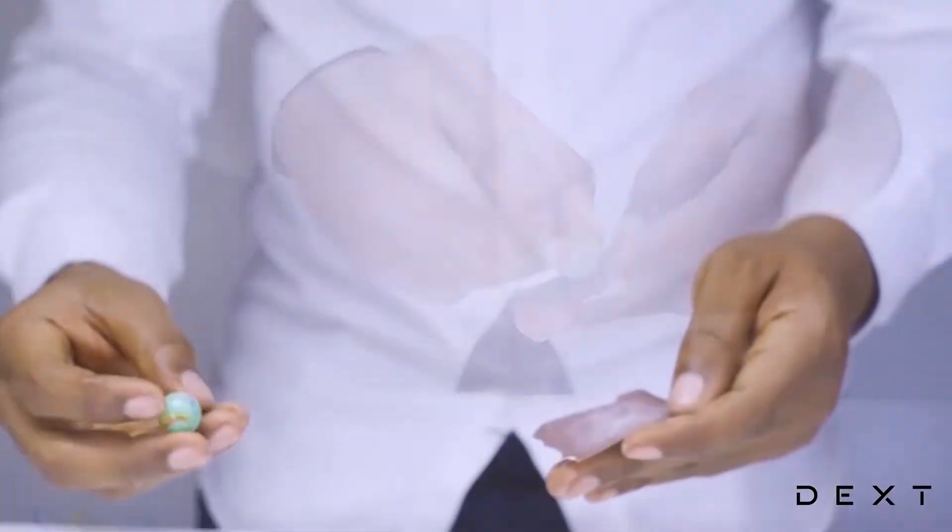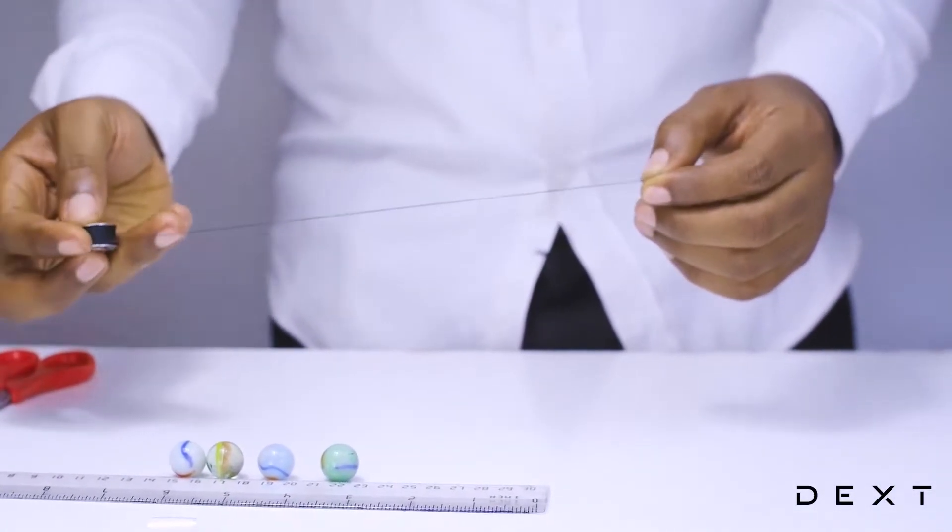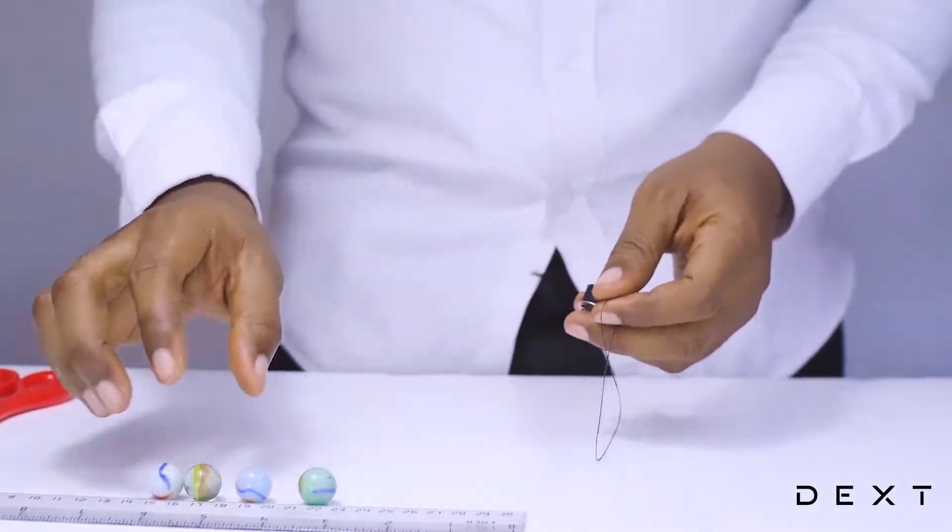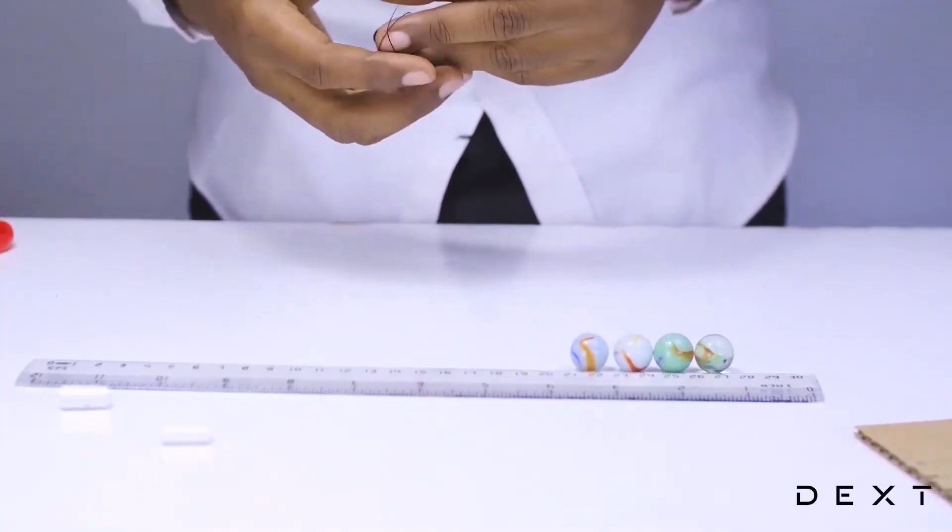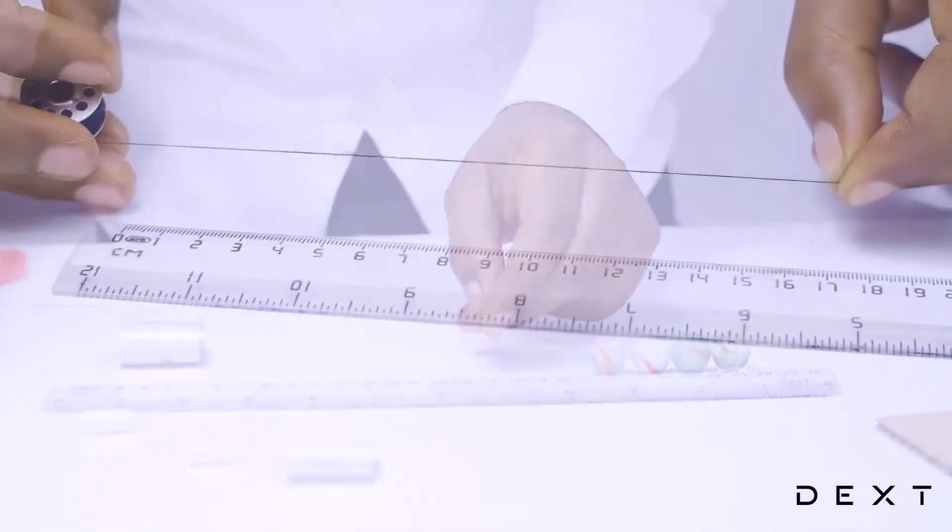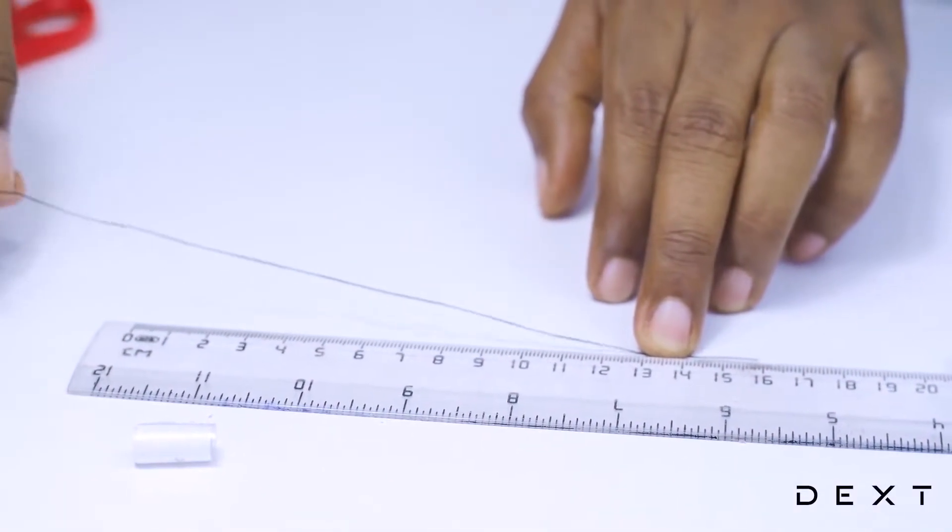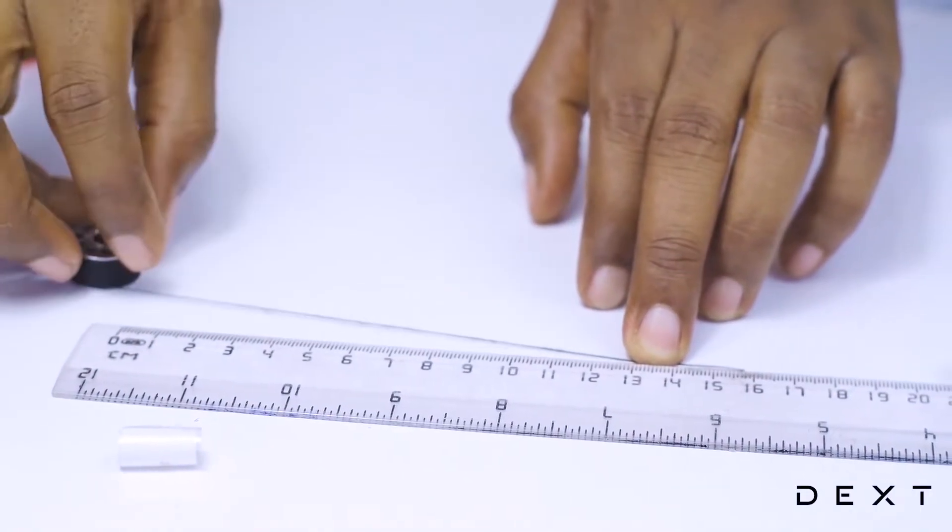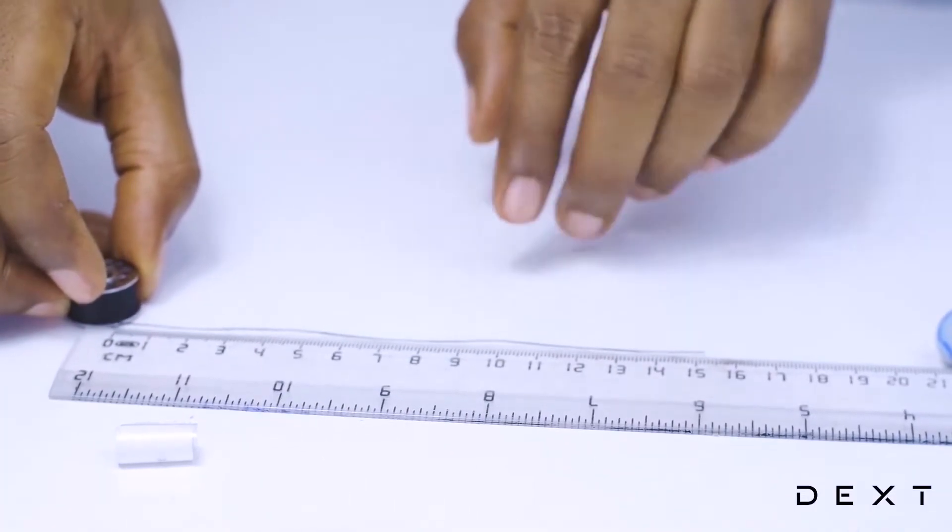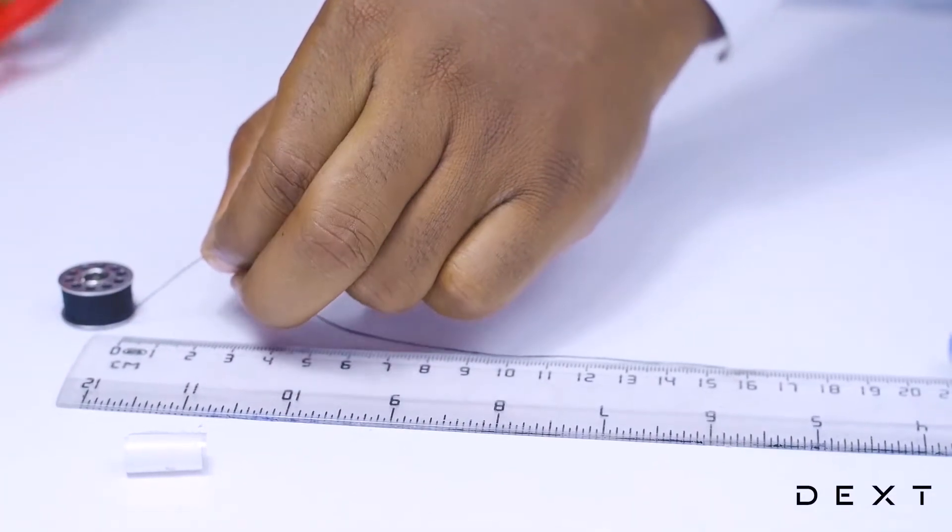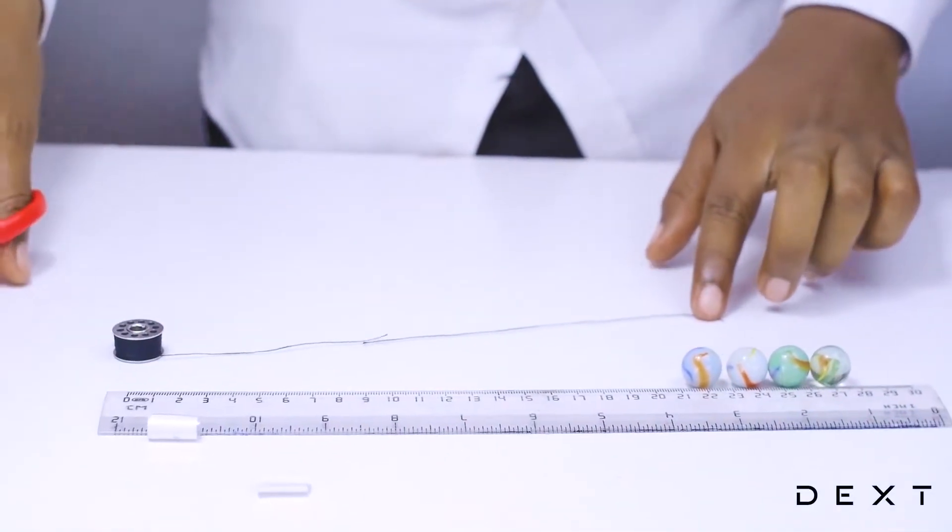Once we are done, you are going to need some strings. We are going to cut a string of length 15 cm. We are going to cut 4 of such strings with each marble having its own string.